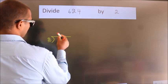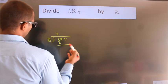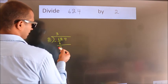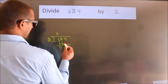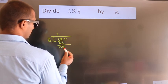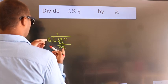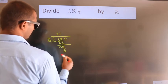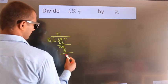Next, we have 6 here. When do we get 6 in the 2 times table? 2 times 3 is 6. Now we subtract and get 0. After this, bring down the beside number, so bring down 2.